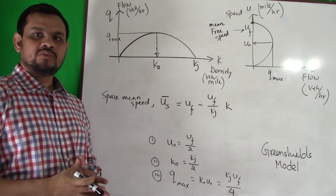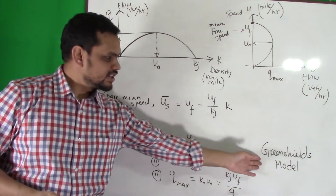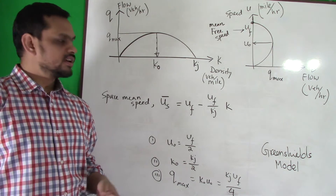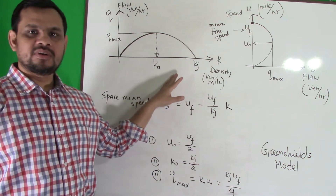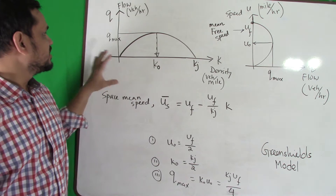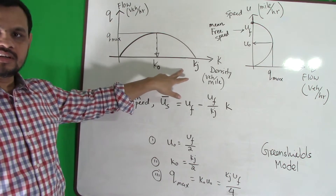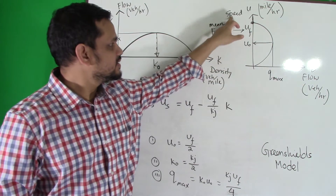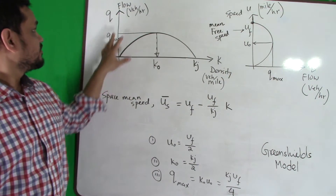Today we will start the Greenshield model. Before starting the model, we should know some theory first. The first theory is about flow versus density, and the next one is speed versus flow.